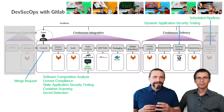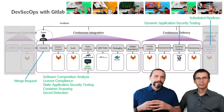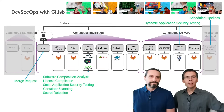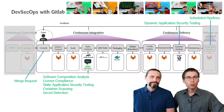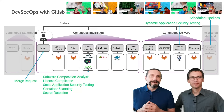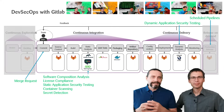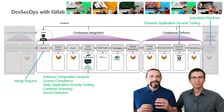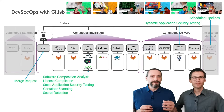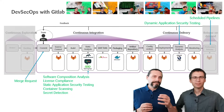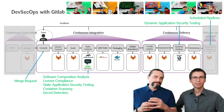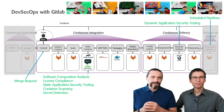Then we enabled dynamic application security testing, which is basically a penetration test on the running application. We leveraged merge requests to tell us what security impact changes have, and in the end we introduced scheduled pipelines where we can define a schedule for the pipeline to run on production code so that we can find new vulnerabilities identified in the meantime.